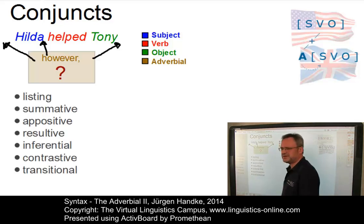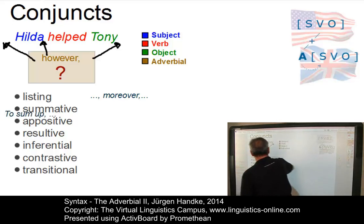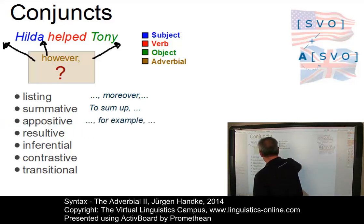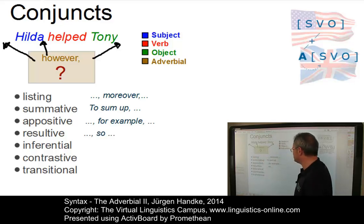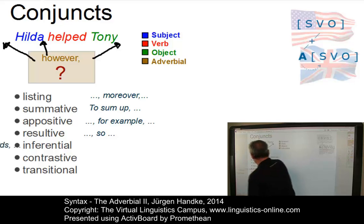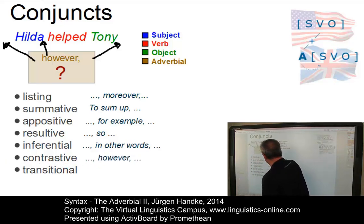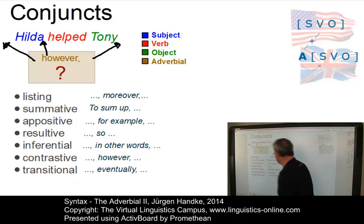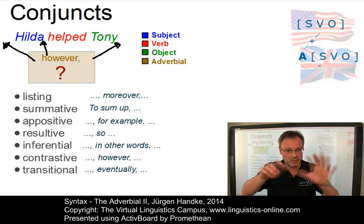Conjuncts can be associated with specific semantic roles. For example, we have listing conjuncts such as moreover, summative conjuncts such as 'to sum up', appositive conjuncts such as 'for example', result conjuncts such as so, inferential conjuncts such as 'in other words', adversative conjuncts such as however — which expresses contrast — and transitional conjuncts such as eventually. Note that conjuncts from different sets can co-occur with each other within the same sentence.